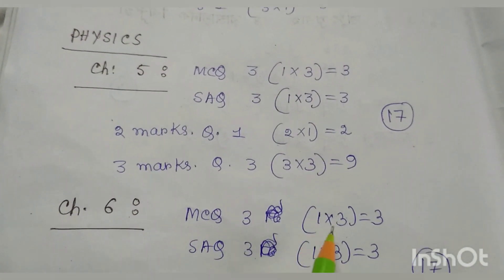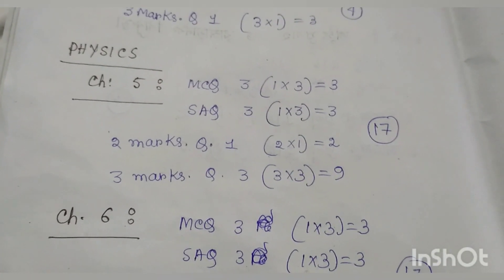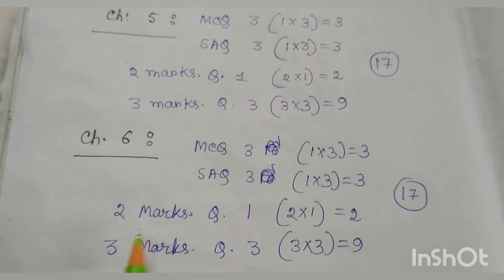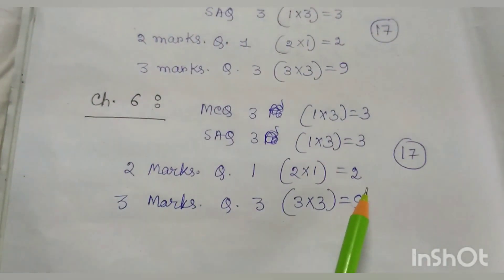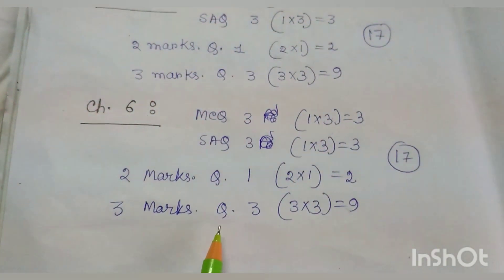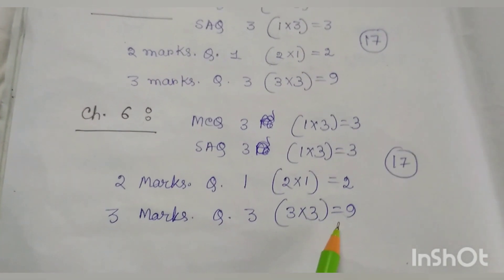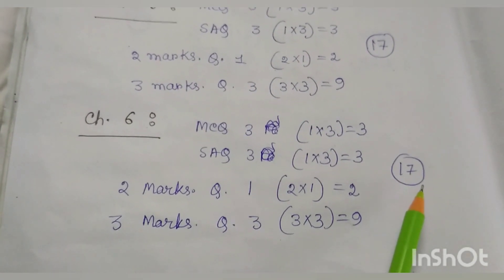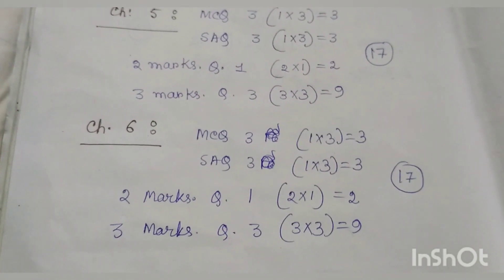Chapter 6 Current Electricity — MCQ: 3 questions, 1×3 = 3 marks; SAQ: 3 questions, 1×3 = 3 marks; 2 marks question: 1 attempt, 2×1 = 2 marks; 3 marks question: 3 attempts, 3×3 = 9 marks. Total 17 marks. So Chapter 6 is also very important.